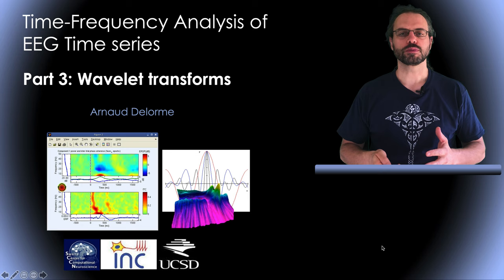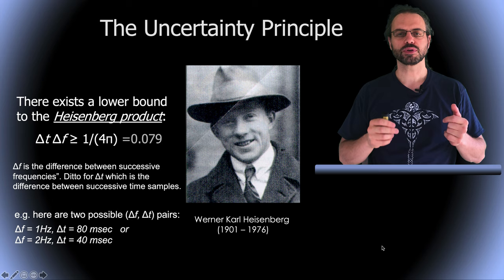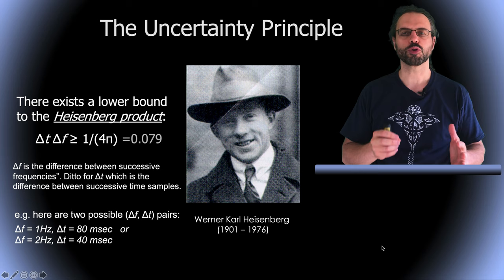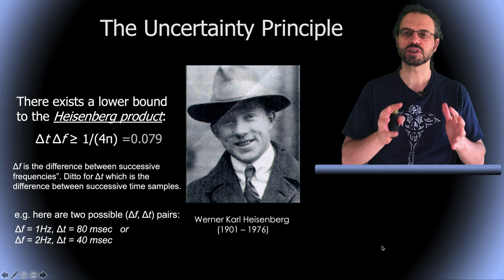First, let's talk about the Heisenberg's uncertainty principle. The principle states that there is a trade-off between time and frequency resolution. There is a lower bound to the product of delta frequency times delta times, and it is the inverse of 4π. Delta F is the difference between two successive frequencies, so it's the frequency resolution, and delta T is the difference between successive time samples, so it's the time resolution.